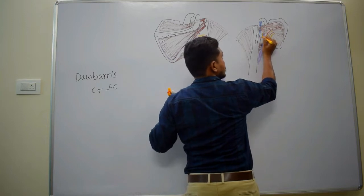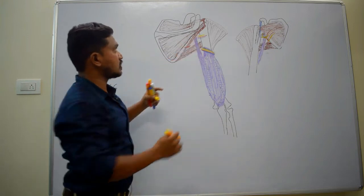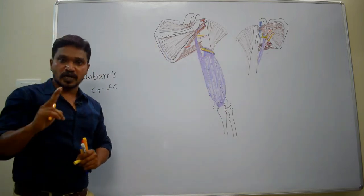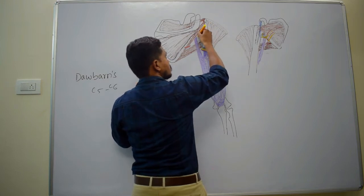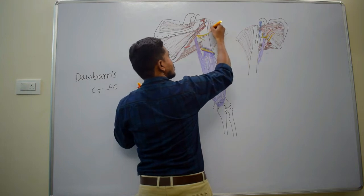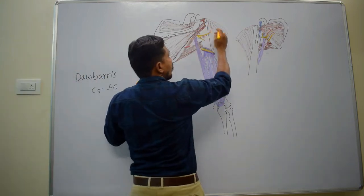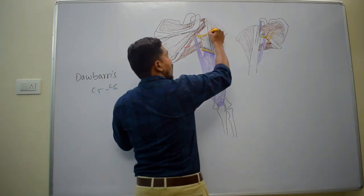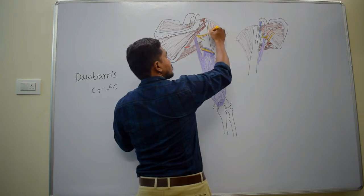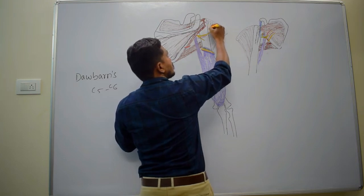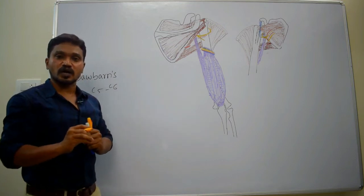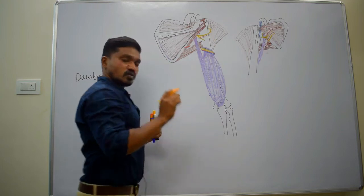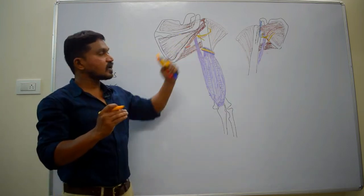After passing through the quadrangular space, it comes back to the posterior aspect. Within the quadrangular space, it divides into two branches: an anterior division and a posterior division. The anterior division winds around the surgical neck of the humerus, then runs anteriorly almost up to the anterior border of the deltoid muscle, supplying to the deltoid muscle.